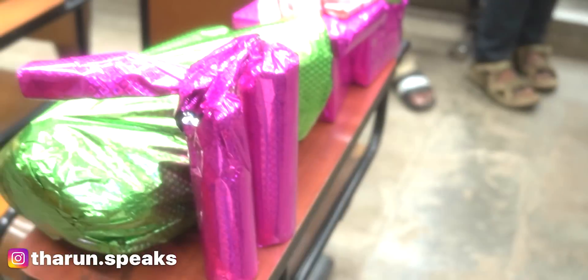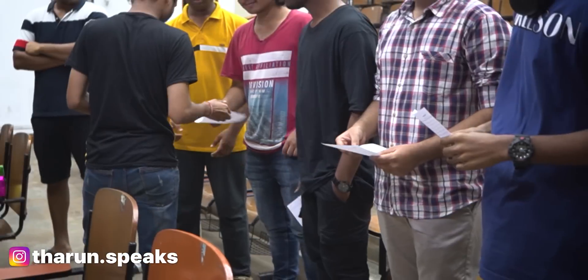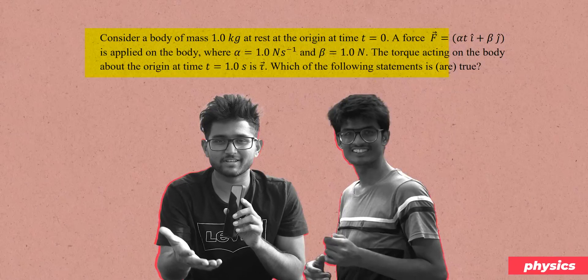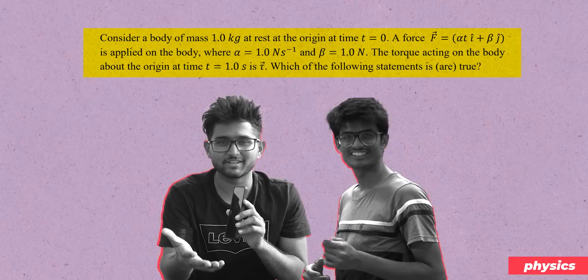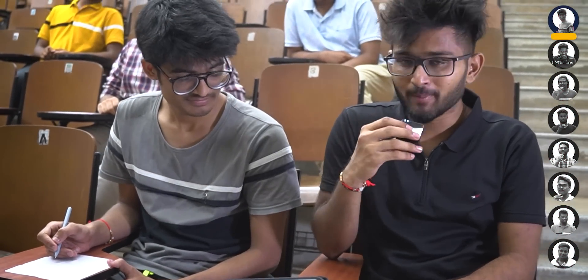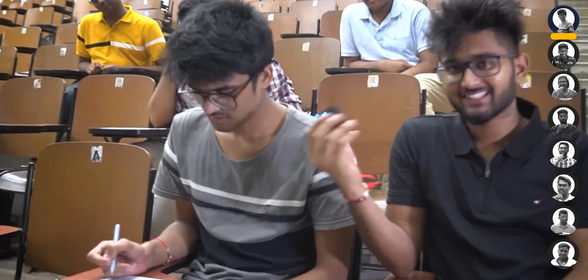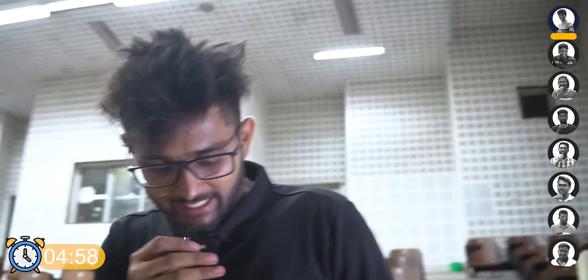Here we have the questions, the papers and pens, and there we have the goodies. So Nihit, which subject do you want to choose? Physics. Here's your question. Consider a body of mass 1 kg at rest at the origin at time t equals 0. A force F equals... Nihit, did you note the question? Yes. How much time do you think you'll take? 5 minutes. Meanwhile, let's give Nihit some time and go to the other people.